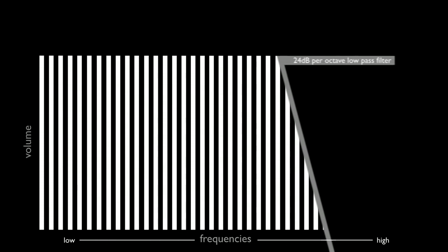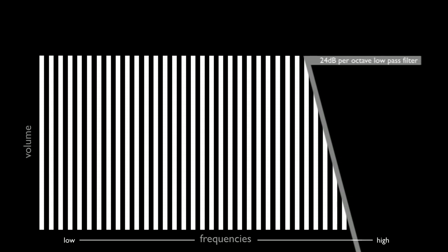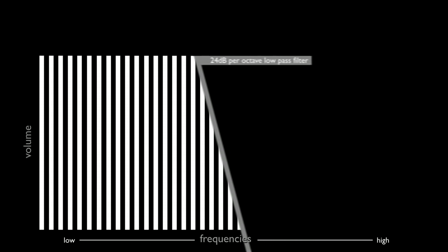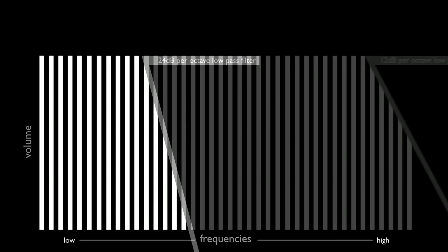24 decibels per octave is a steep slope. Fewer of the frequencies cut off are heard after they're cut off. So in the case of the low-pass filter, you can hear relatively little of the frequencies above the filter cutoff point.